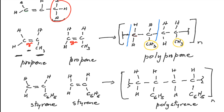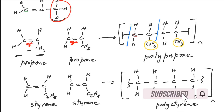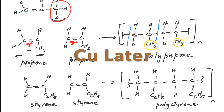So for addition polymers: we have one product formed, one type of monomer is used, and it's normally an alkene. Stay tuned for the next video where we'll look at condensation polymers, broken down just like this one. If you found value here, leave a like, leave a comment, and be sure to share this with a friend. Thank you for joining Chem with Chem.